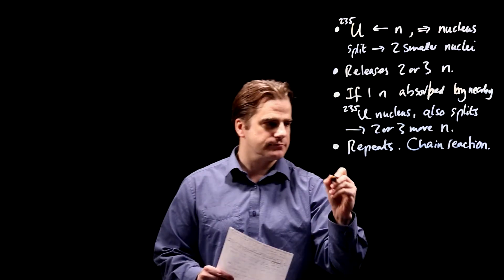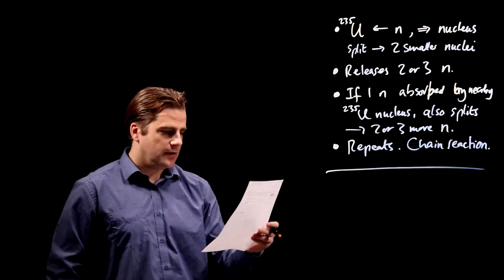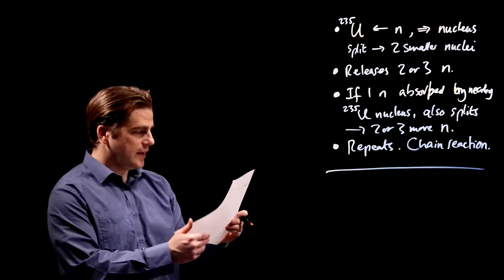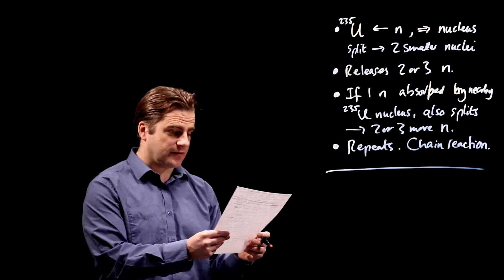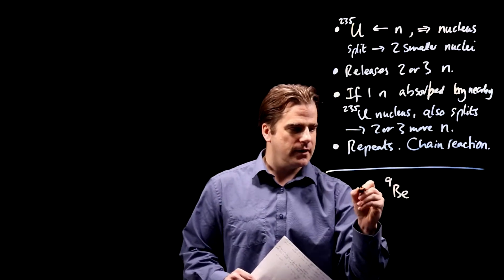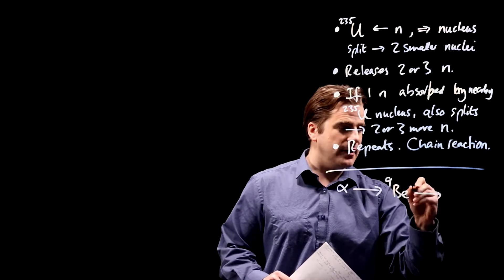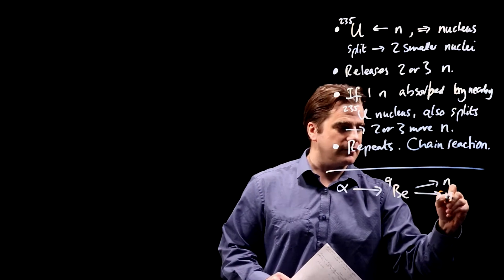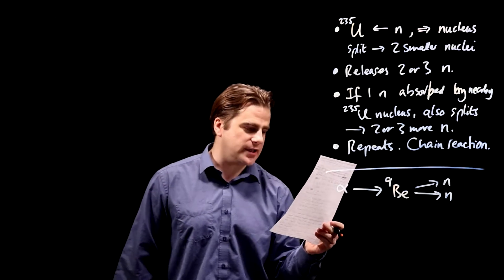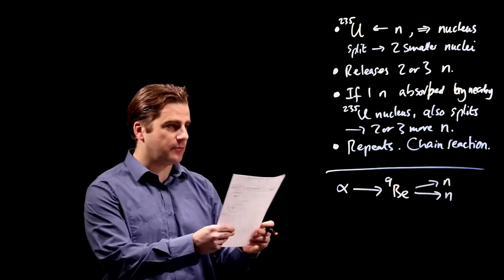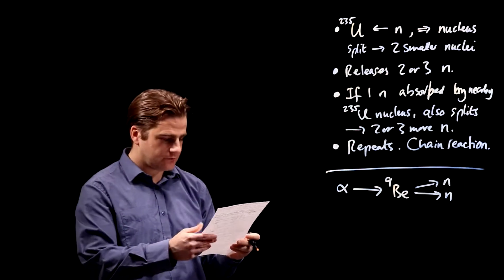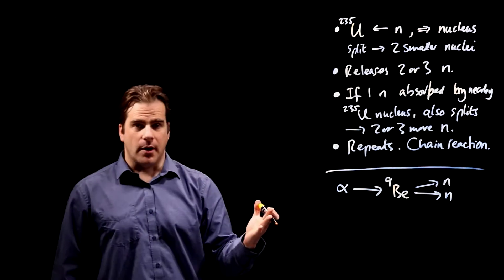Part two. The beryllium-9 nuclei do not absorb neutrons. Instead, they absorb alpha particles and emit neutrons. So you've got beryllium-9. It absorbs an alpha particle, but it emits neutrons. Give a reason why a chain reaction can result from the emission of neutrons by uranium nuclei, but not by beryllium nuclei. It's only one mark.